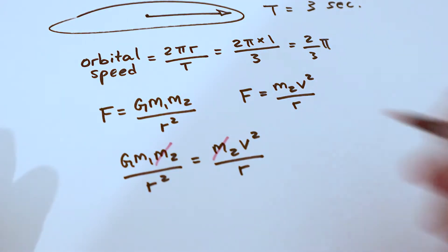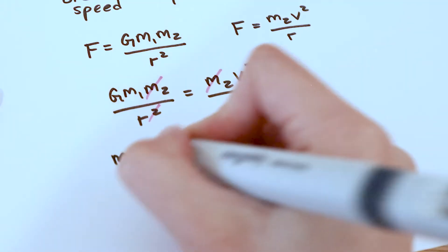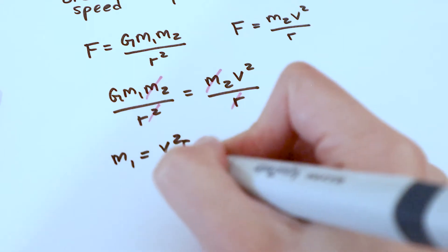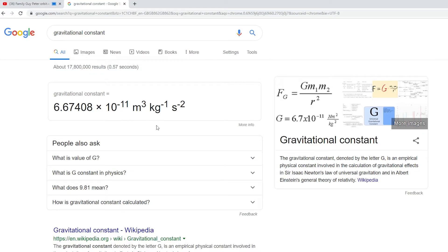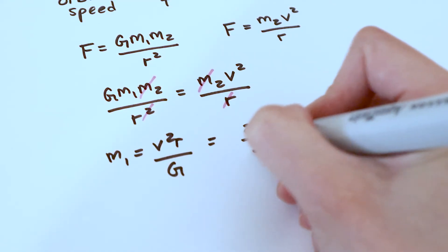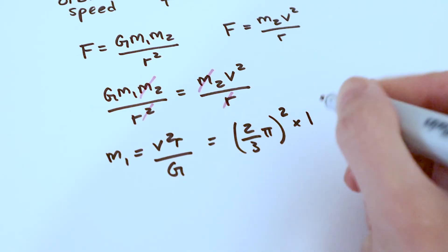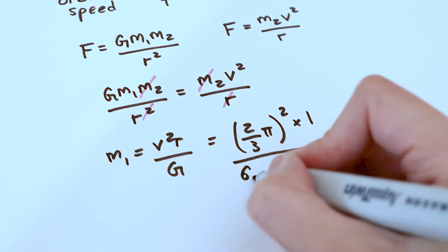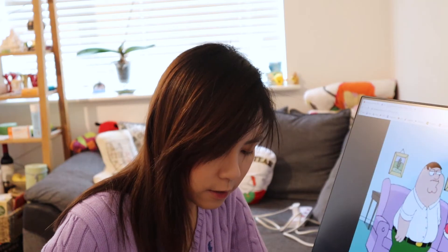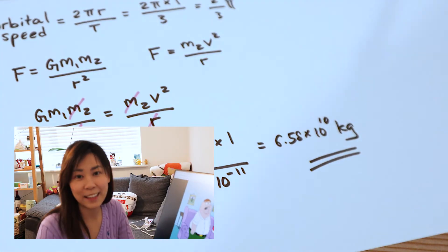m₂ appears on both sides of the equation, so we can cancel it out. So m₁ = v²r / G. Don't forget capital G is the gravitational constant, equal to 6.67 × 10⁻¹¹. So let's plug some numbers in: the orbital speed is 2/3 π, we square that and multiply by r = 1, then divide by the gravitational constant. We get 6.58 × 10¹⁰ kilograms.